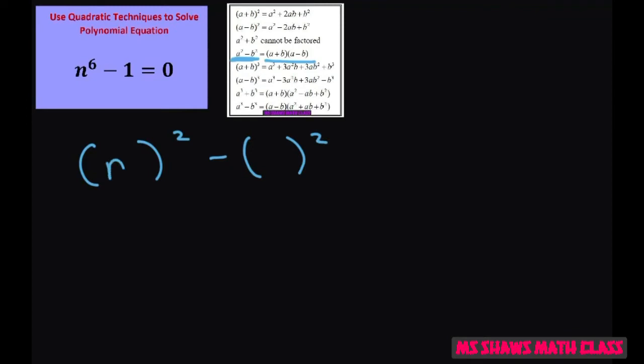This is going to end up being n cubed minus 1 squared. So now we have this a squared minus b squared, and we can expand.